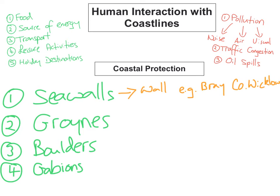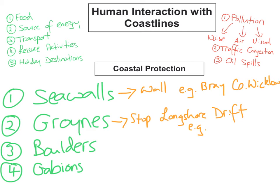Groynes are concrete or wooden barriers built at right angles to the sea. They slow down the process of longshore drift, and they are used at Rosslare Strand in County Wexford to stop longshore drift.